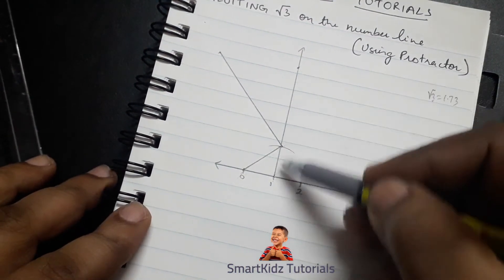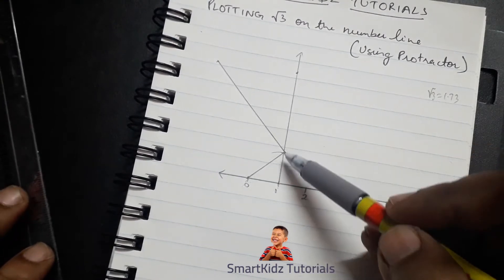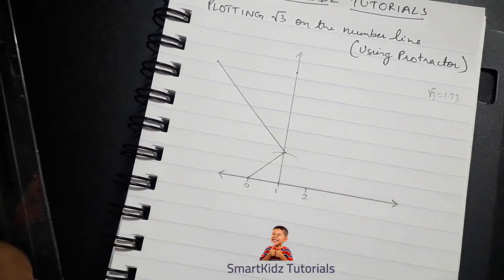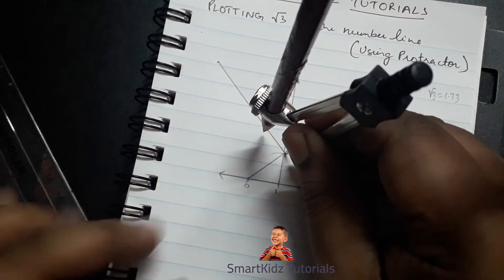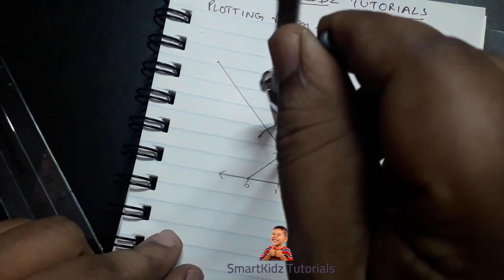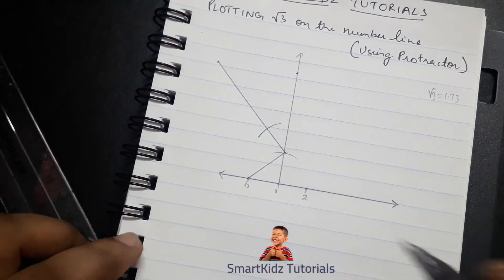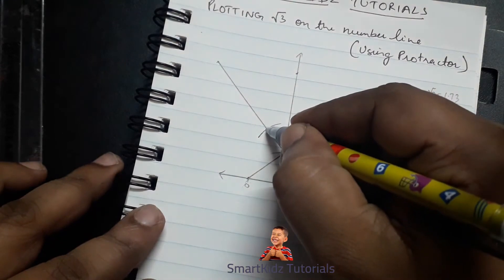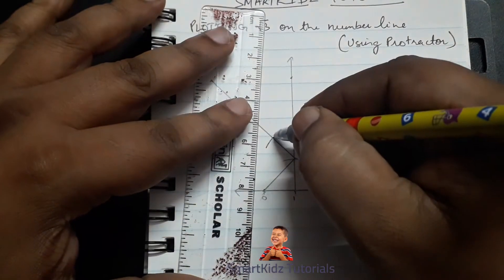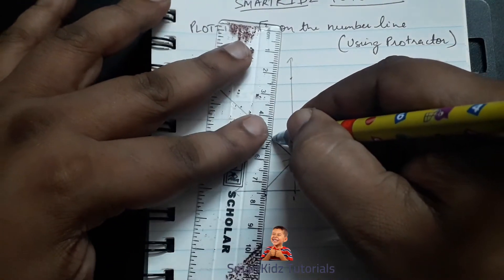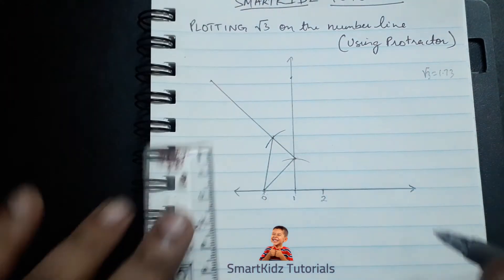Once we have done that, we have to cut one unit from this perpendicular line, just like how we did for root 2. I've got my measurement already for one unit — all I have to do is keep the pointer here and cut one unit on this line. Where this arc cuts the line, I mark that point, and I join this point to the origin.